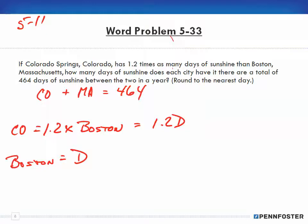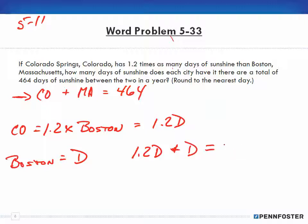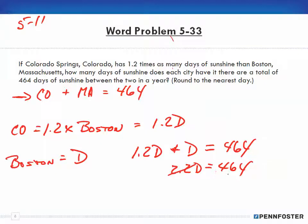Once we have those two terms — d for Boston and 1.2d for Colorado — we plug those into our equation. So it's 1.2d plus d equals 464. Now all we need to do is the math. 1.2d plus 1d is 2.2d, and that equals 464. Then we divide both sides by 2.2, and that gives us d.